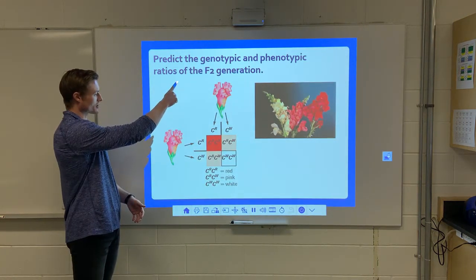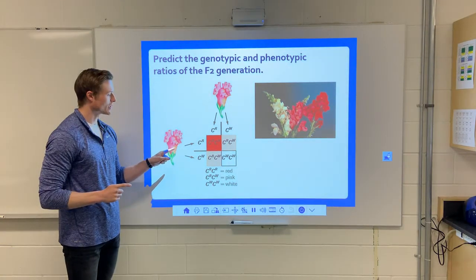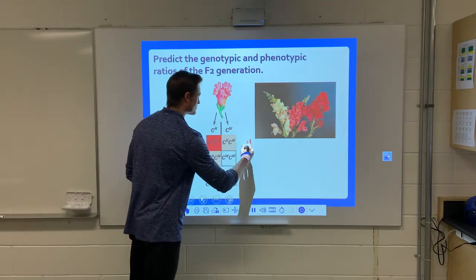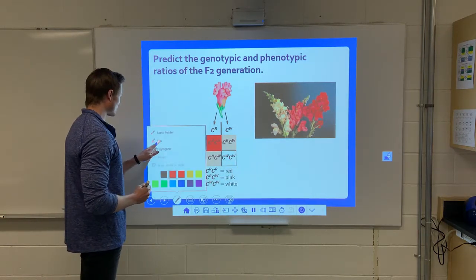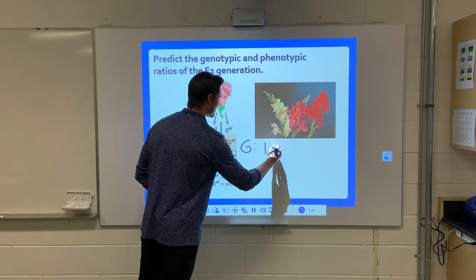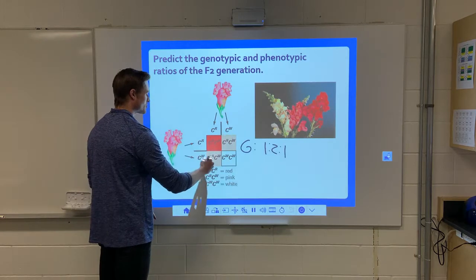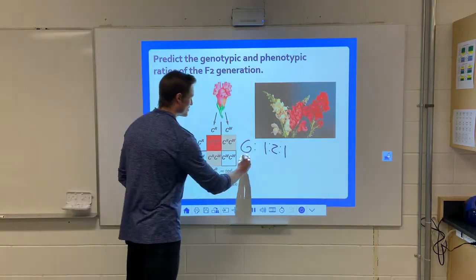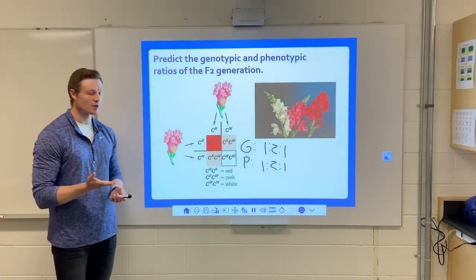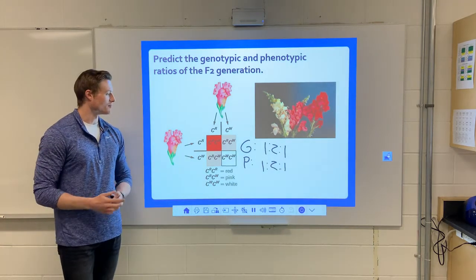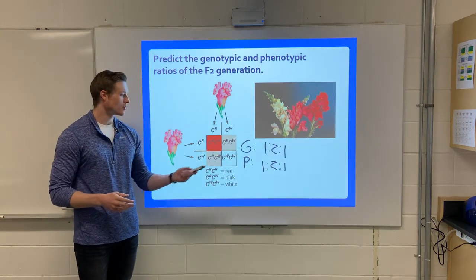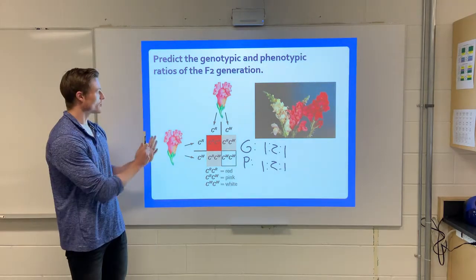So what would happen with the F2 generation? We mix two pink flowers together. The genotype ratio would be 1 to 2 to 1. Our phenotype ratio: one red, two pink, and one white. Our genotype ratio actually matches our phenotype ratio, which is quite nice — you know exactly what genotype you have just by looking at the phenotype. A pink flower is a hybrid, a red flower is homozygous dominant, and a white flower is homozygous recessive. That's incomplete dominance.